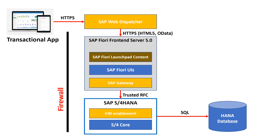Hello, everyone. In the previous session, we set up authorizations on the front-end and back-end server, but we were doing it on an individual basis. Obviously, that's going to take a lot of time. There is a way to set up authorizations for multiple applications in one step. We have the hub deployment, the front-end server, and the back-end server — they are on separate systems. Let's see how we can set it up in one go.